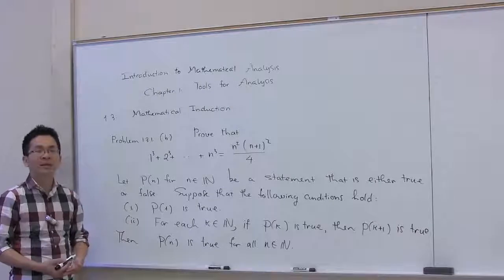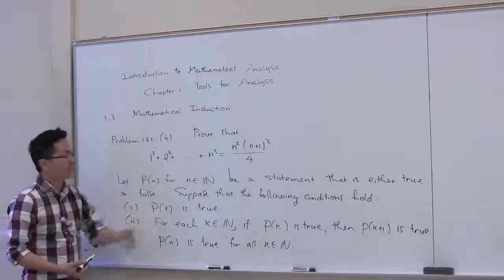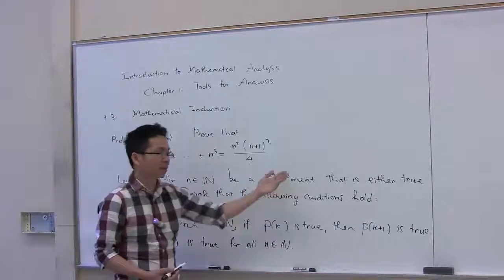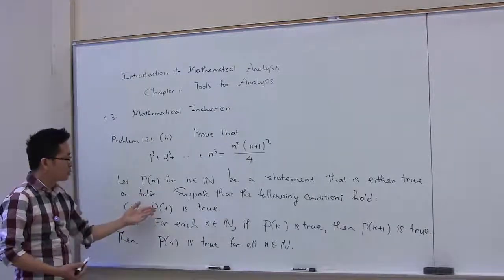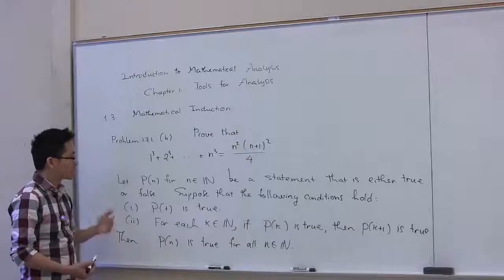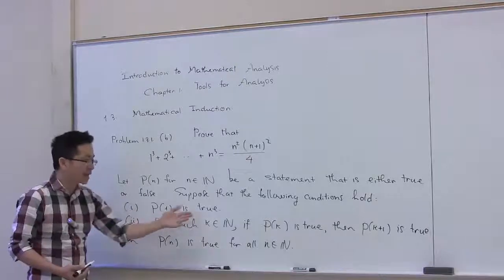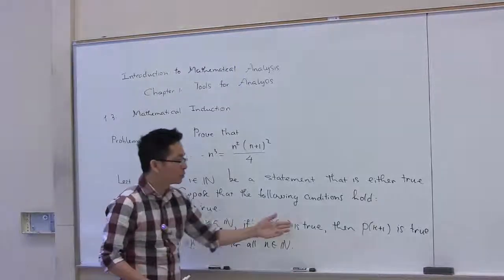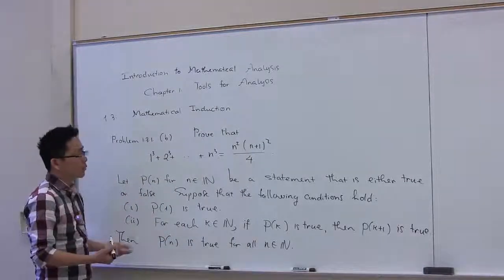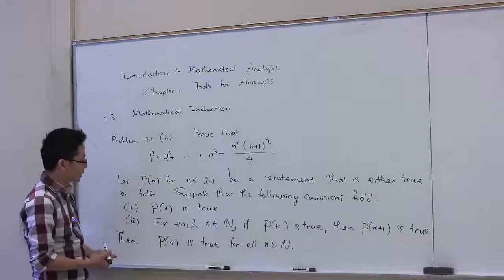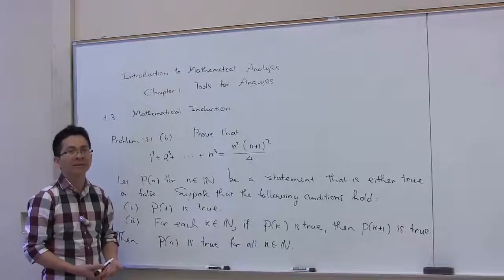Before solving the problem, let me go through the method of mathematical induction. Let P(n), for an integer of all natural numbers, be a statement that is either true or false. Suppose that the following conditions hold: P(1) is true — that means the statement is true when n is equal to 1. The second condition is: for each k in N, if P(k) is true, then P(k+1) is true. That means the statement P(k+1) is true whenever P(k) is true. Under these two conditions, we can say that P(n) is true for all n in N.